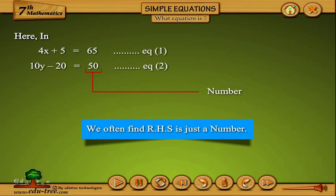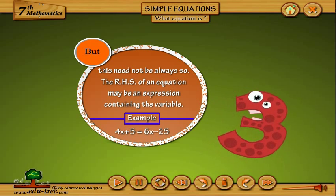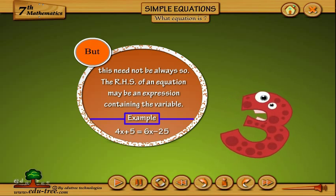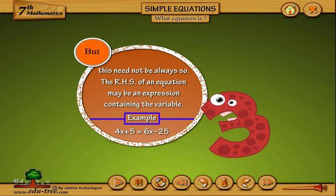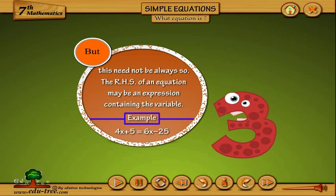We often find RHS is just a number. But this need not be always so. The RHS of an equation may be an expression containing the variable. Example: 4x plus 5 equals 6x minus 25.